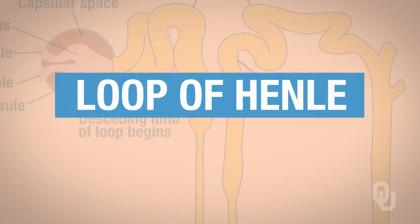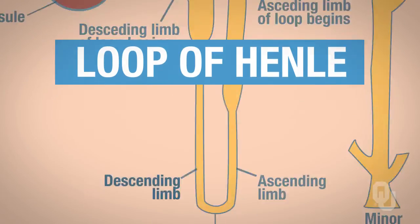Next we're going to focus on the loop of Henle. This is one of the parts of the nephron — one of the tubules. We're going to be focusing on reabsorption and secretion in the loop of Henle.